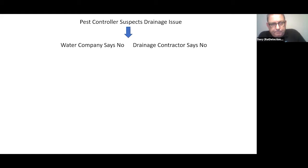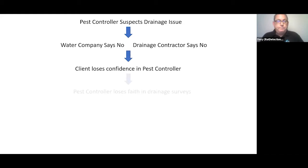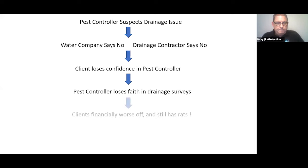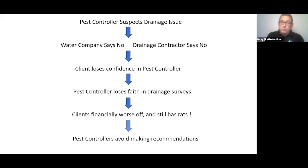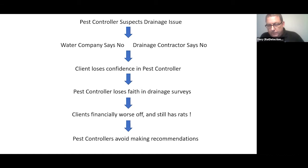Through Drain Domain, we were getting a lot of contact from clients and pest controllers saying that rat problems in buildings weren't getting solved. The typical scenario: a pest controller would attend site, do two or three visits, can't find obvious above-ground entry points, and figures it must be a drainage issue. The client rings the water company or a drainage contractor, and they attend site and say it's not a drainage issue.